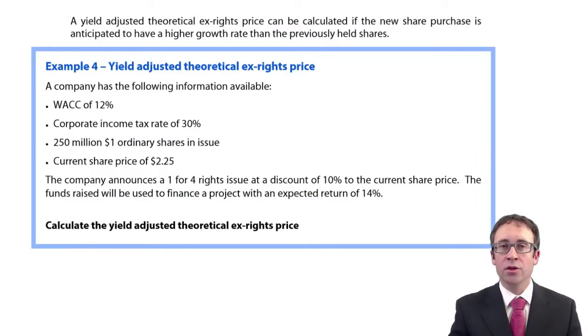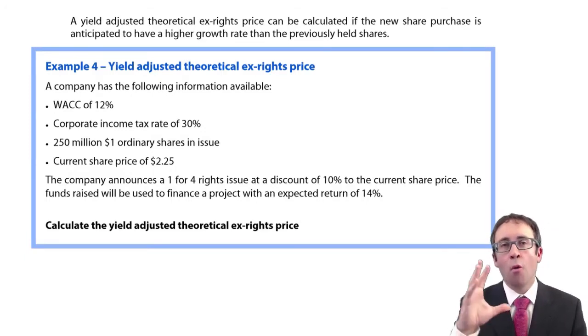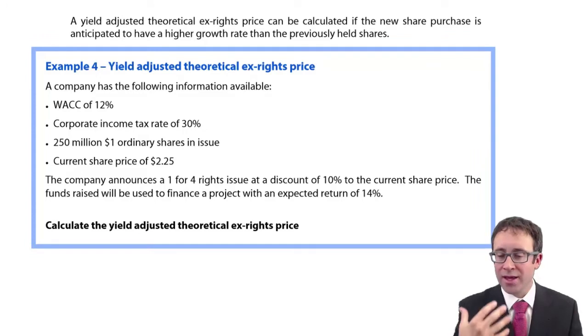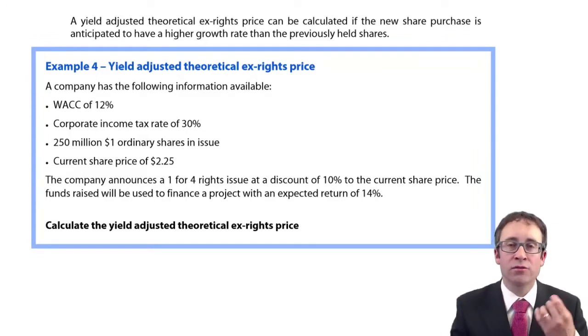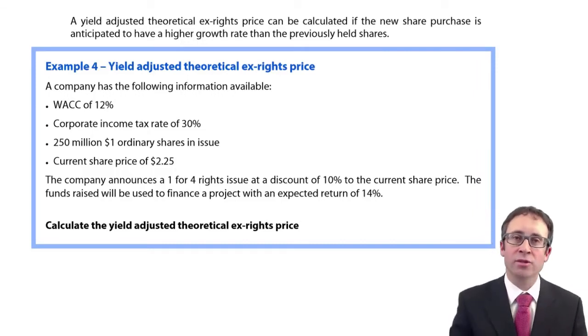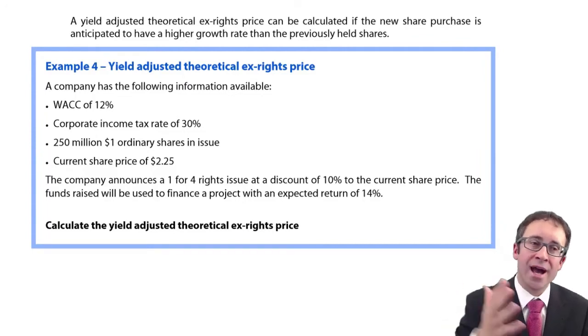We're going to look at an additional type of question that could be asked as part of your objective test questions. This looks at working out the theoretical ex-rights price when the new shares that are issued are going to have a higher potential rate of growth into the future, a higher rate of return than what the current shares are generating. That is referred to as your yield-adjusted theoretical ex-rights price, because your yield is your return and we're looking at these new shares generating a higher return.